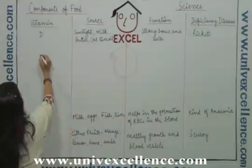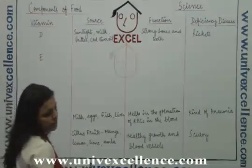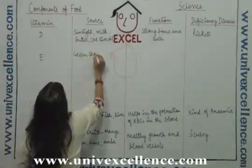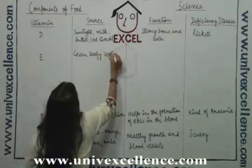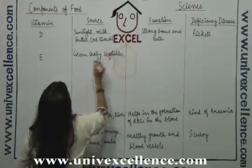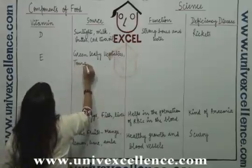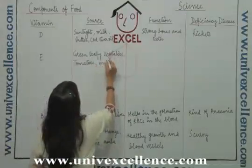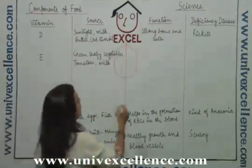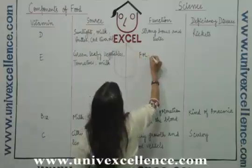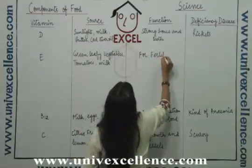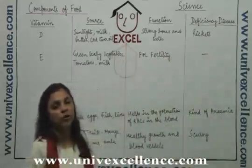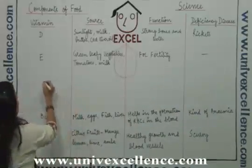The next vitamin is vitamin E. It is present in green leafy vegetables, tomatoes, and milk. It is required for fertility. There is no specific disease associated with its deficiency.